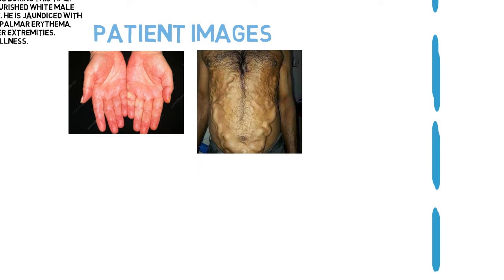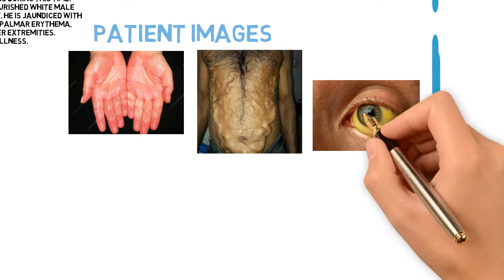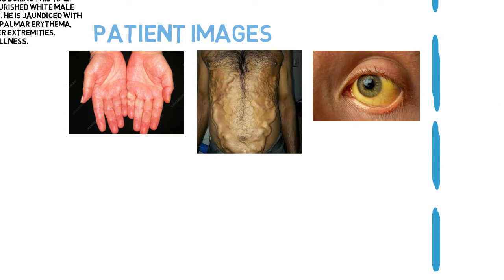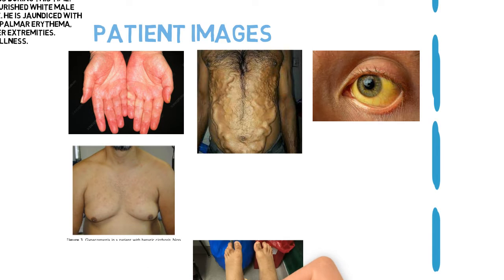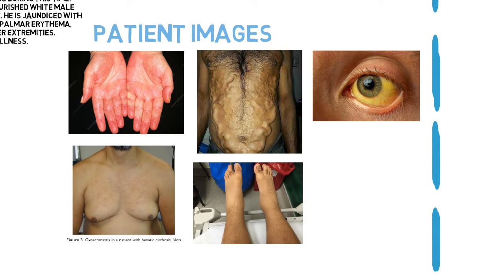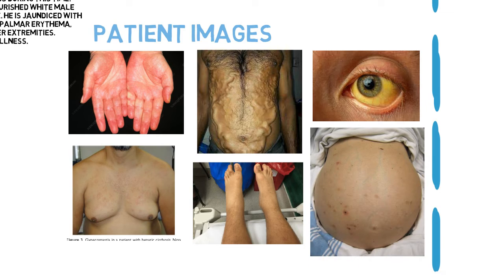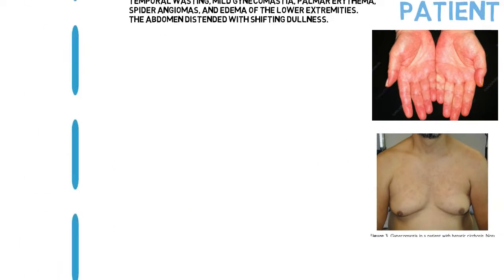Patient images show liver palms — erythema of an adult alcoholic. Caput medusae: dilated superficial superior and inferior epigastric veins radiating from a central large venous network. Icterus or jaundice. Gynecomastia. Edema of the lower extremities. Abdomen distended with shifting dullness.